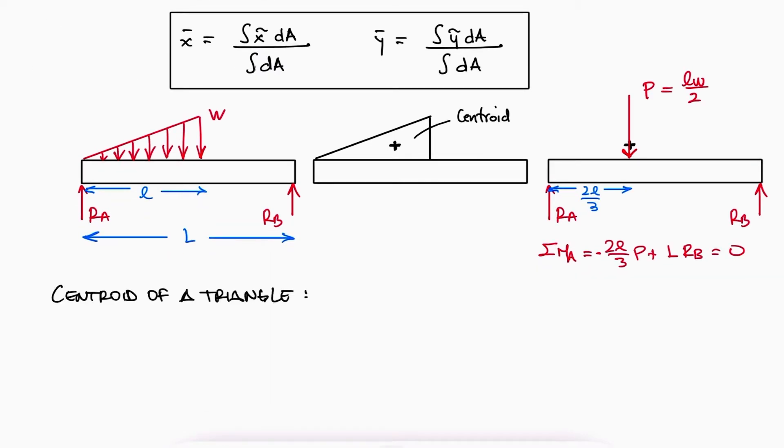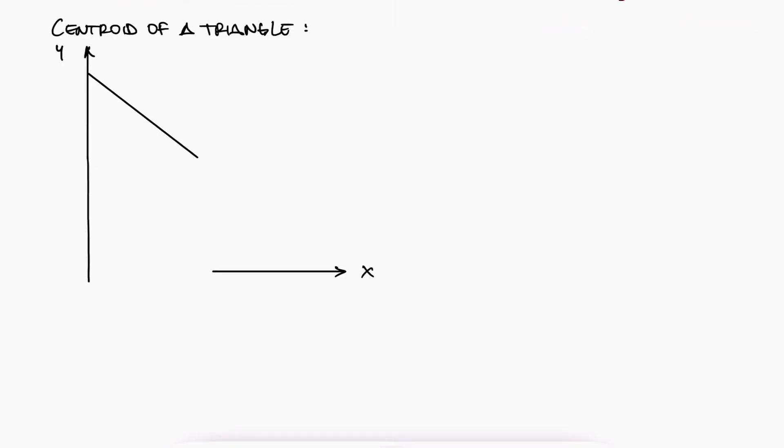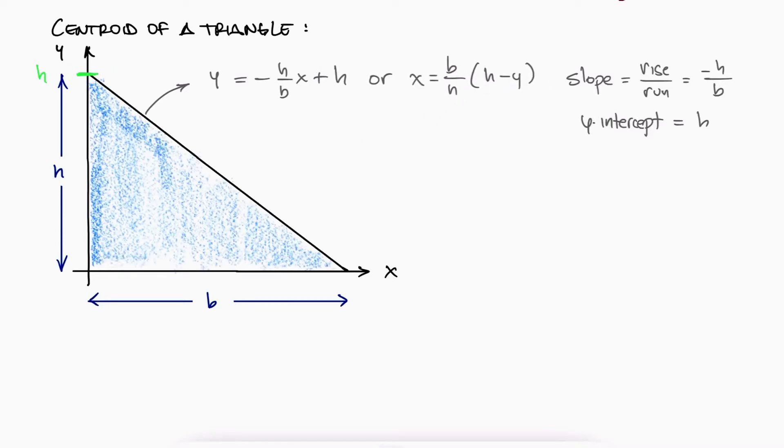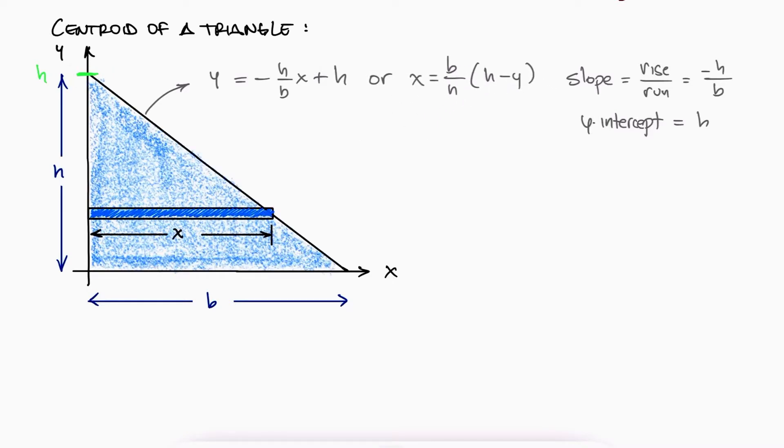If we want to find the centroid of a right triangle like this, that has a base b and a height h, the diagonal line would be described by a straight line equation where the slope is rise over run, or in this case minus h over b, and the y intercept is h. Solving for x, we find b over h times h minus y. This tells us the width of any rectangle at a distance y.